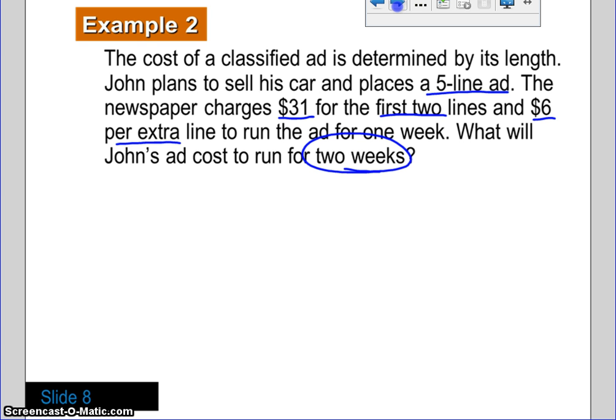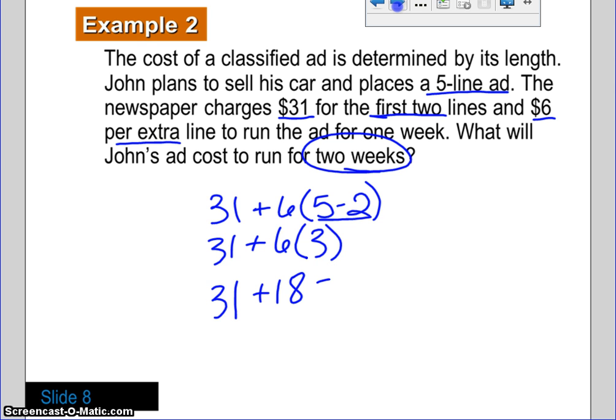So, very important to notice that it's not just asking about one week. We're going to solve it for one week, but then we need to do something to make that for two weeks. So, we know that it's $31 plus it's $6 for every line over the first two lines. So, that's the equation that we would actually write. The first part here is the $31. That's the first cost of the two lines. Well, we don't want to recharge ourselves for those two lines, so we have to take those out. It's lines 3, 4, and 5 that are going to be charged at $6 apiece. So, our next line, we're going to go ahead and combine this here. And we end up with 31 plus 6 times 3, which is 5 minus 2.